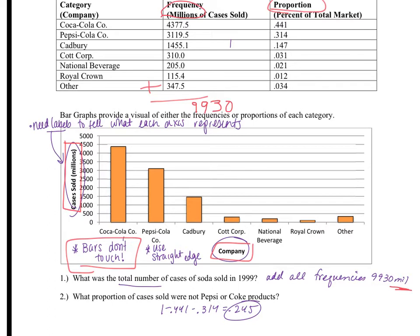Now how many cases were not Pepsi or Coke? Since these are the big categories, take 1 minus 0.441 minus 0.314 to get the rest of the percentage, which equals 0.245.